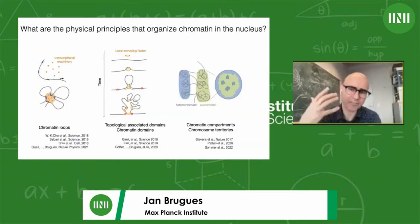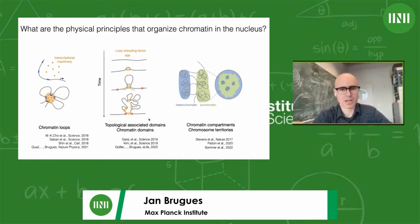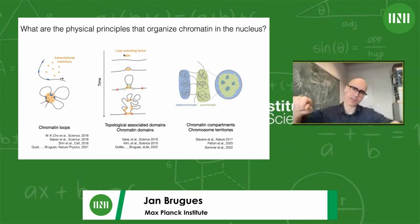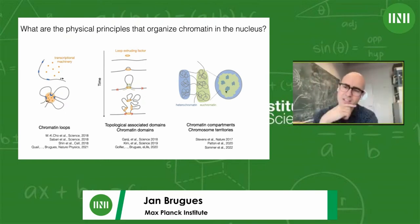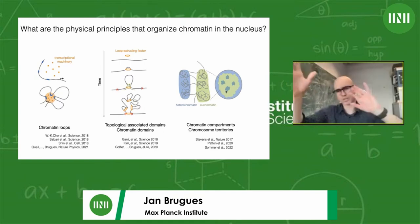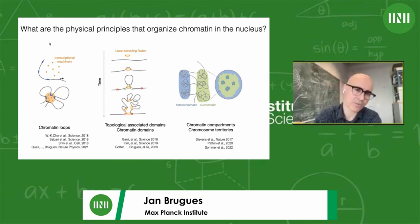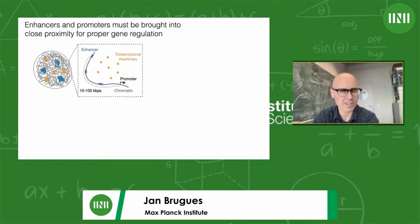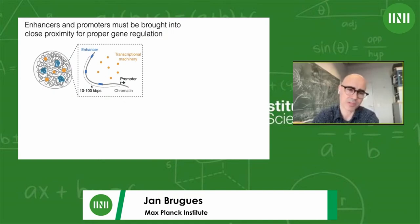We've made progress understanding the physical principles governing this organization. At the smallest scale, the transcriptional machinery interacts with DNA to form chromatin loops. At the topological domain scale, molecular motors extrude loops. At larger scales, chromatin domains are thought to be separated by polymer-polymer interactions. Today I want to focus on the smallest scale — how the transcriptional machinery interacts with DNA.